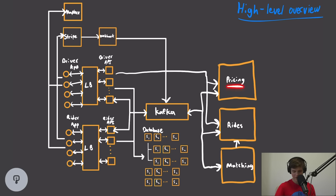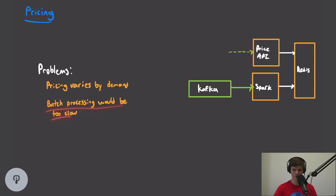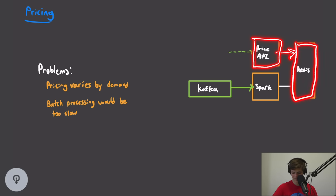The next problem is the pricing model. Pricing for Uber varies by demand — they call this surge pricing. If there's higher demand in an area, for example a concert just ended and 200 people are all trying to call an Uber, they increase the price to take advantage of the higher demand. To calculate price, we need information about demand, and processing every trip in batch would be far too slow. So we'll implement a streaming pipeline.